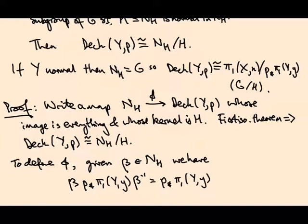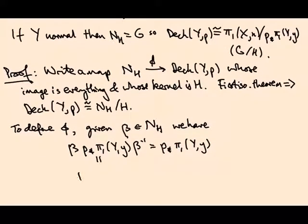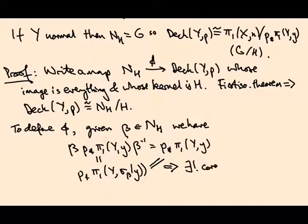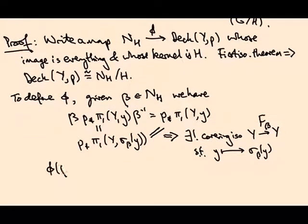By a formula we proved in class, p∗π₁(Y,y) = p∗π₁(Y,σᵦ(y)). So by the existence and uniqueness theorem for covering transformations, there exists a unique deck transformation F from Y to Y such that y maps to σᵦ(y). This is what we call Fᵦ. So φ(β) is this map Fᵦ.